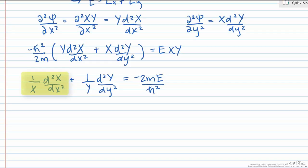Let's take a closer look at this first term, which again is completely independent of y. In other words, if y is varied, only the second term can change. But we know that the sum of these two terms is equal to a constant.